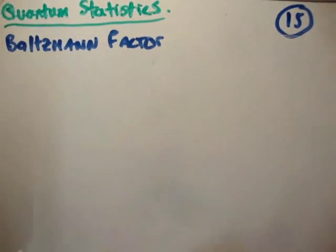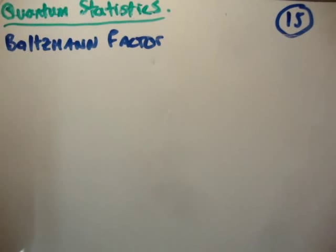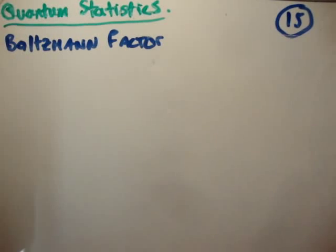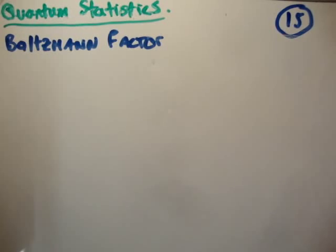The Boltzmann factor is probably the most important quantity in statistical mechanics, so this is a very important thing to understand. Hopefully after this we'll genuinely understand how to do it, or what it means. But the argument is quite subtle — there isn't much maths, but the argument, as I said, is quite subtle. So let's begin.